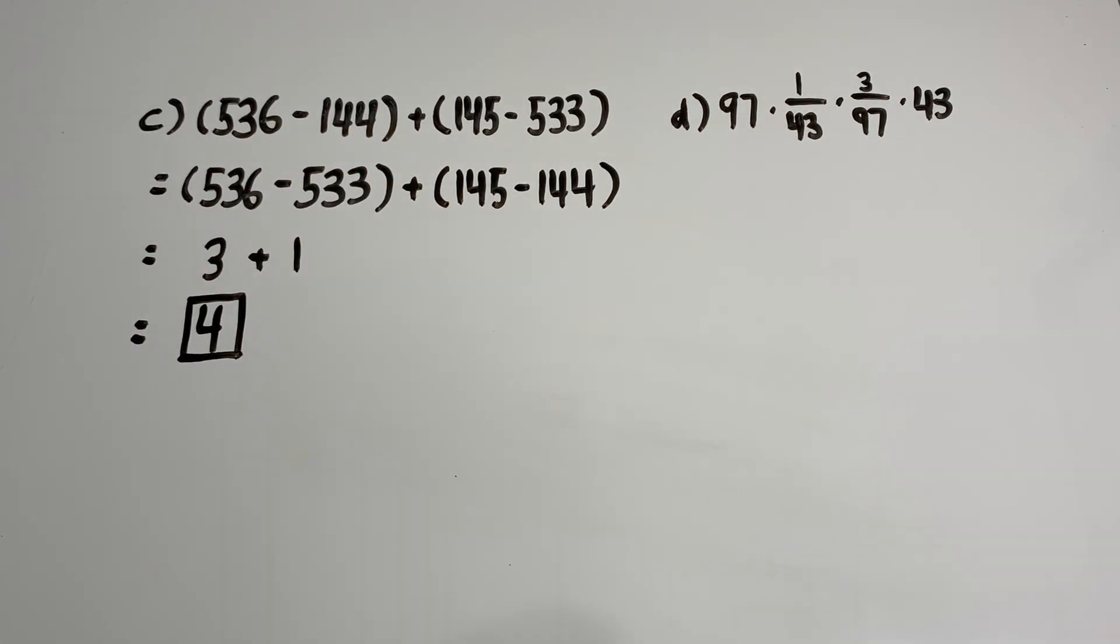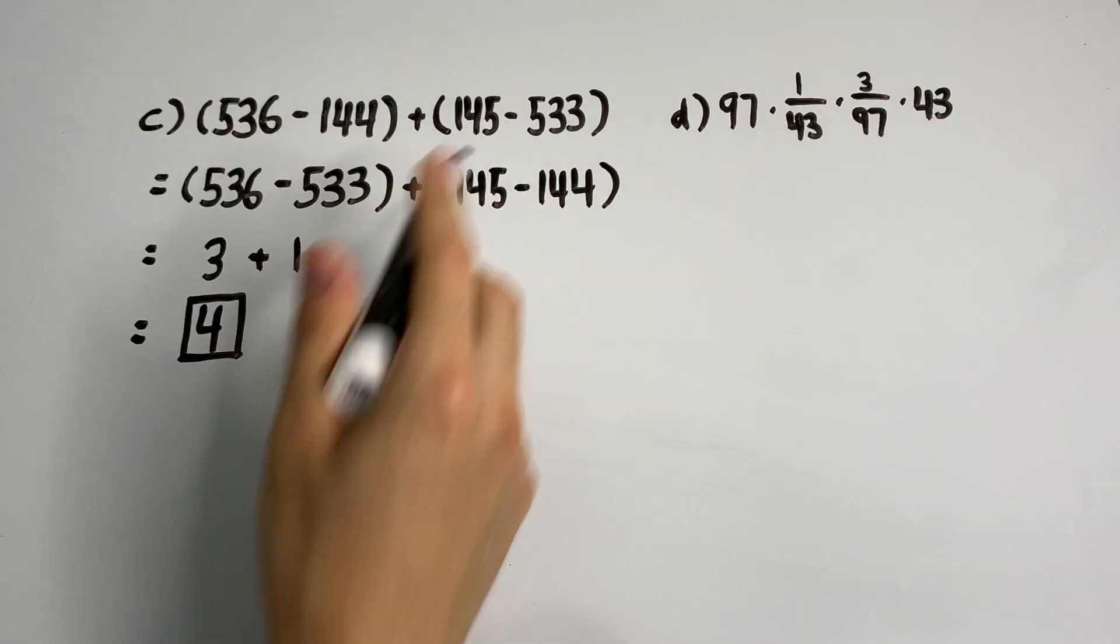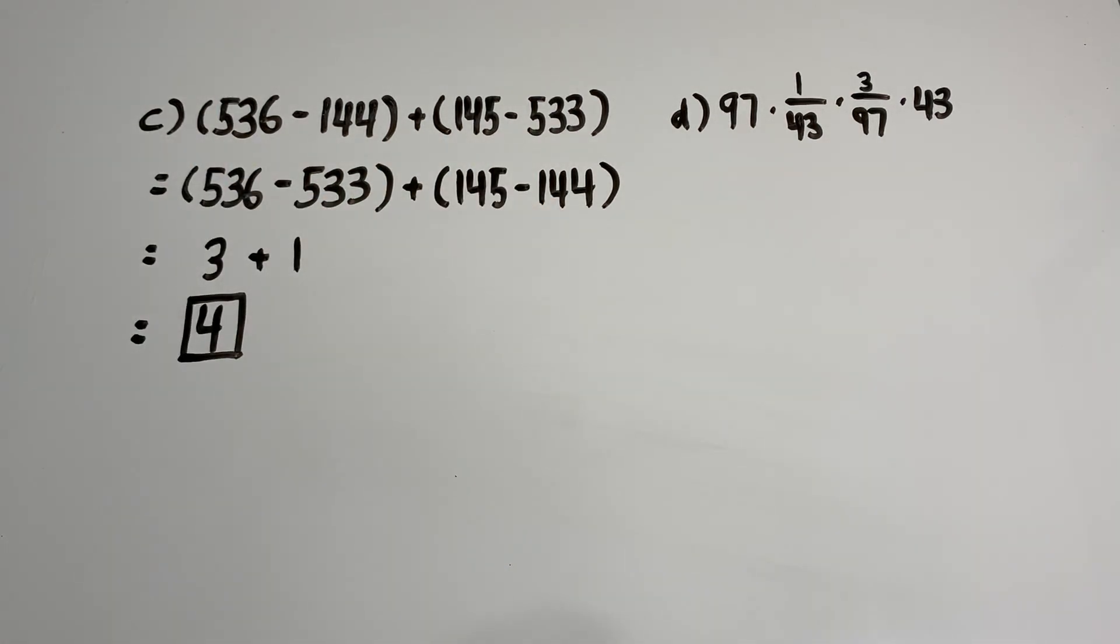You can see that is a much faster way. It would have taken us way longer if we just went from left to right. So thank you to the commutative and associative properties.